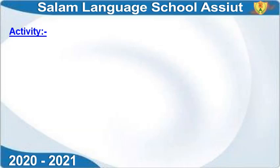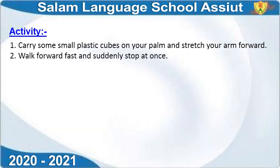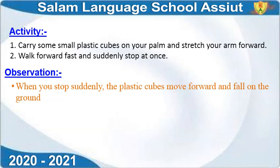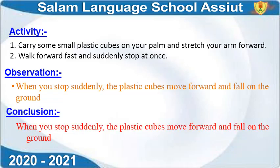Let's see a small activity we can do. Take a small box, place it on your hand, then run and stop suddenly with your arm stretched out. You'll find the box starts to move away from your hand — as soon as you stop, it refuses to stop. Carry a small plastic cup on your palm, stretch your arm forward, walk fast, and suddenly stop at once. Observation: when you stop suddenly, the plastic cube moves forward and falls on the ground.